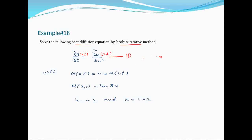X की range 0 से 1 तक है और t greater than 0 है। Boundary conditions: x=0 और x=1 पर value 0 है। यह boundary conditions हैं और जब t=0 होता है वो initial condition होती है।